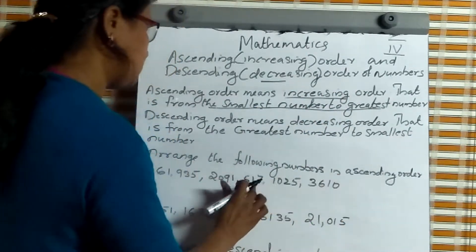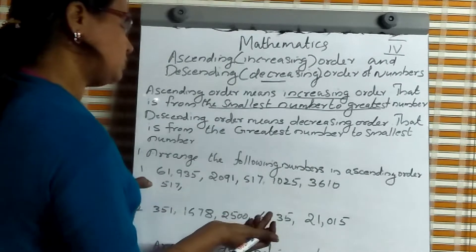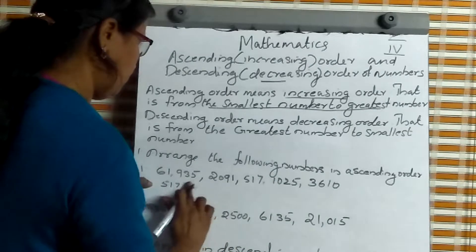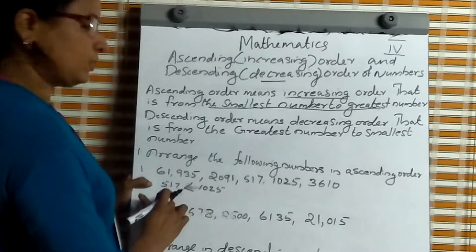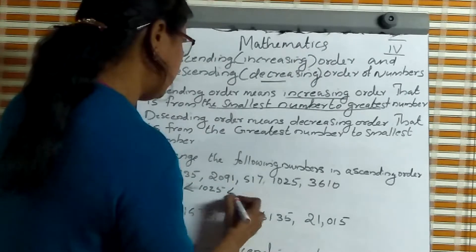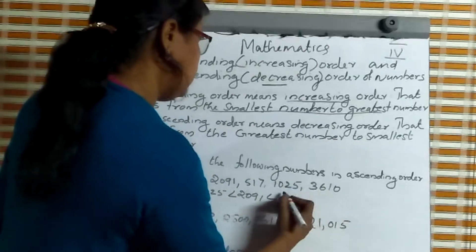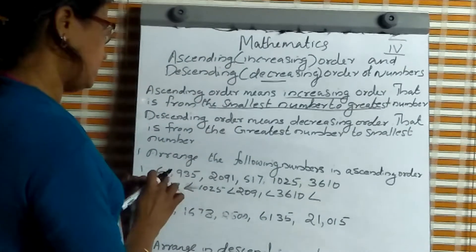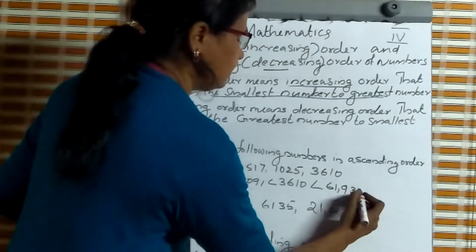Which is the smallest number in this group? 517 is the smallest. Next smallest is 1,025. Here we put the less than sign: 517 less than 1,025. Next smallest number is 2,091. Next one is 3,610, less than 3,610. The last and greatest number is 61,935.